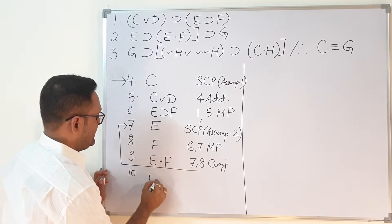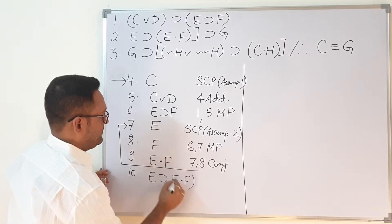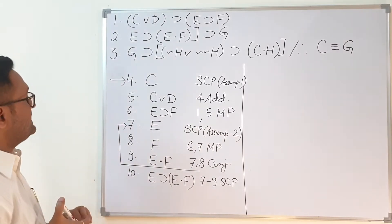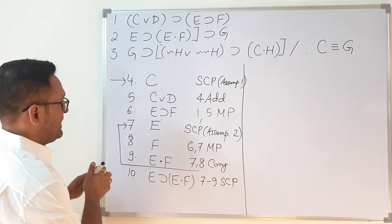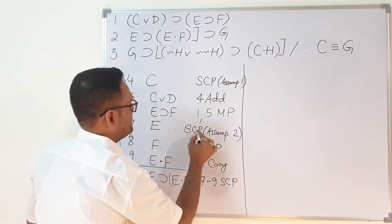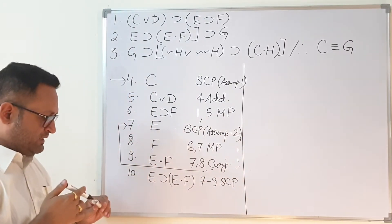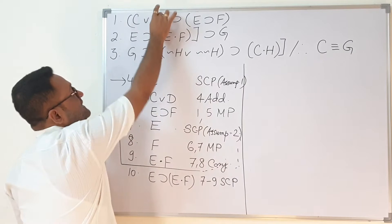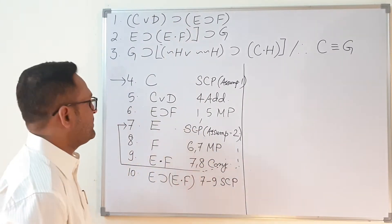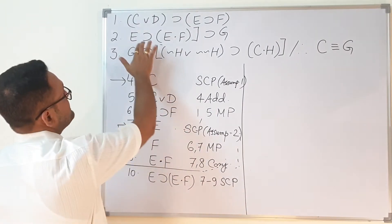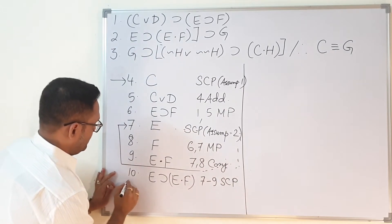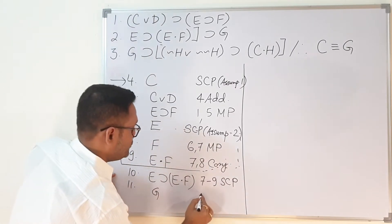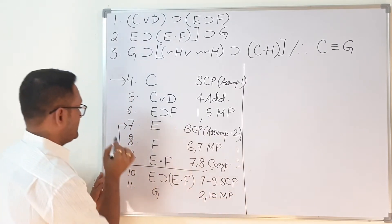Now I put a closure. Line number 10: E implies E·F, derived from lines 7 to 9 by SCP. This part is now closed, so I cannot use lines 7 through 9 going forward. I can use the first three premises and line 10. On line number 11, using lines 2 and 10 by modus ponens, I get G. Now I put another closure.